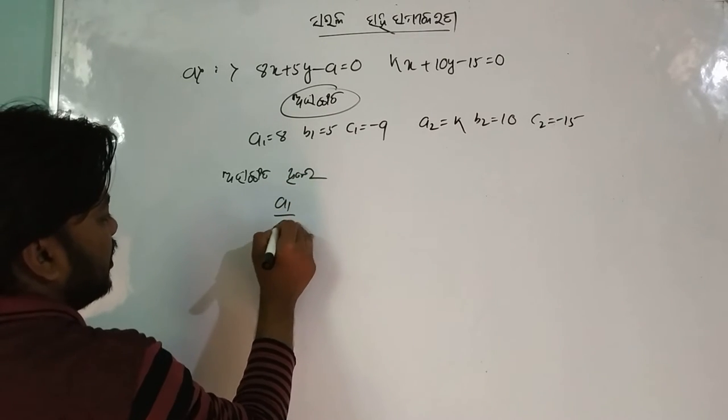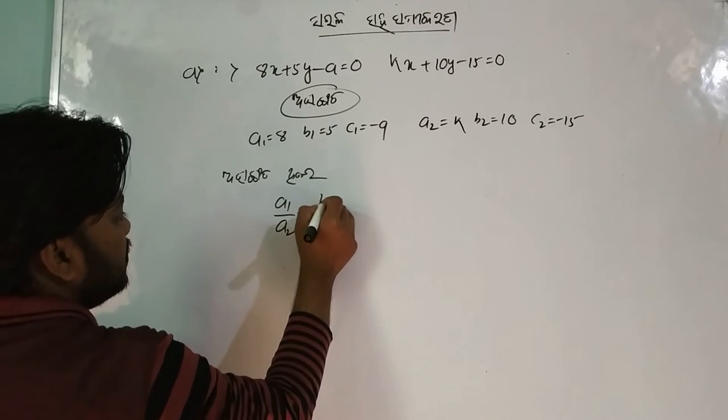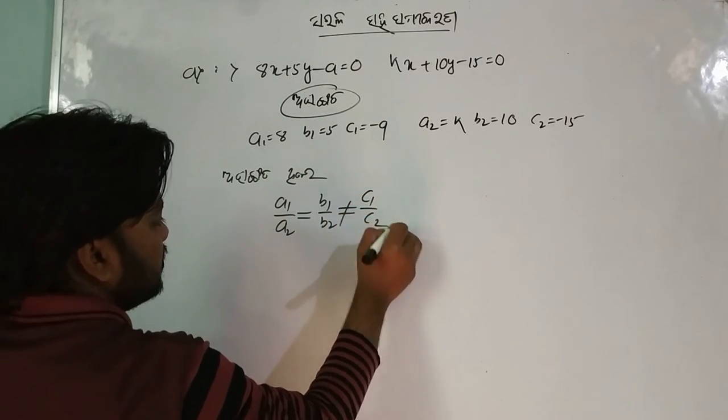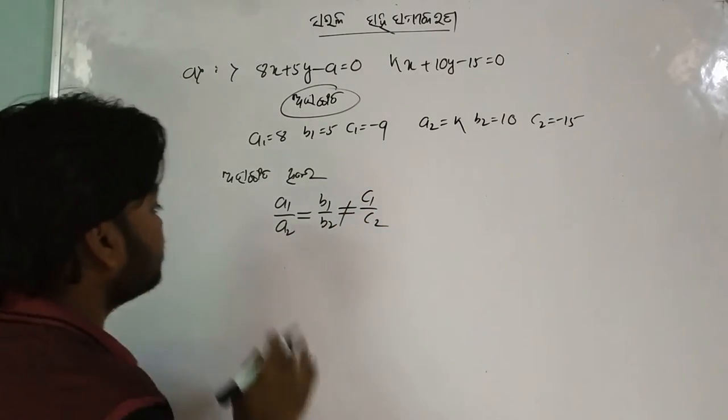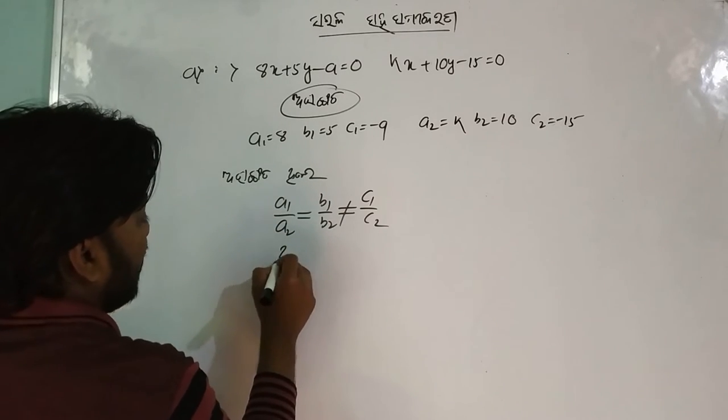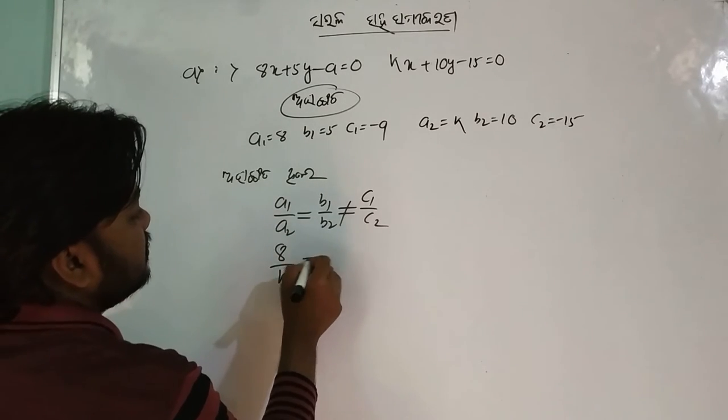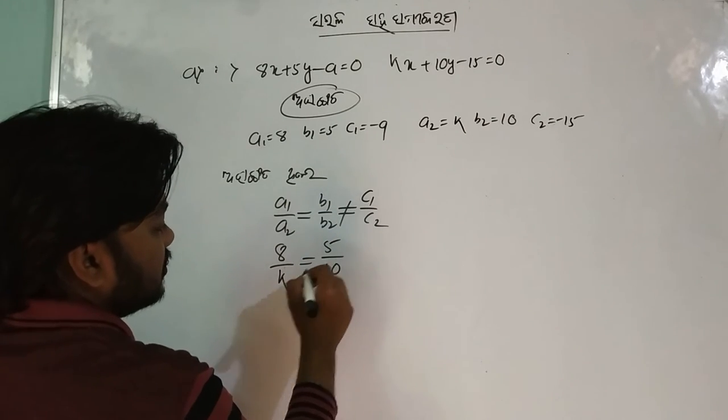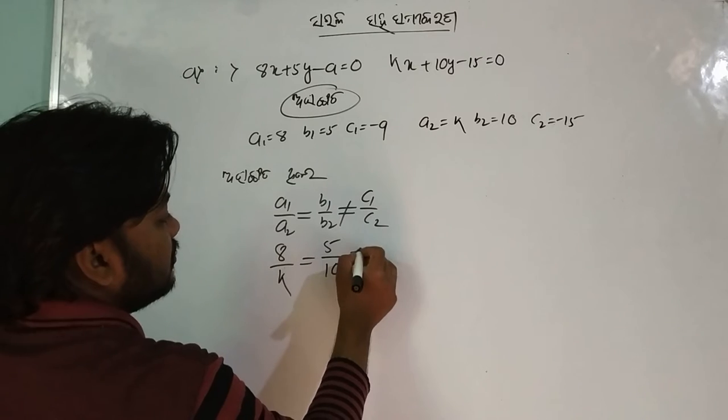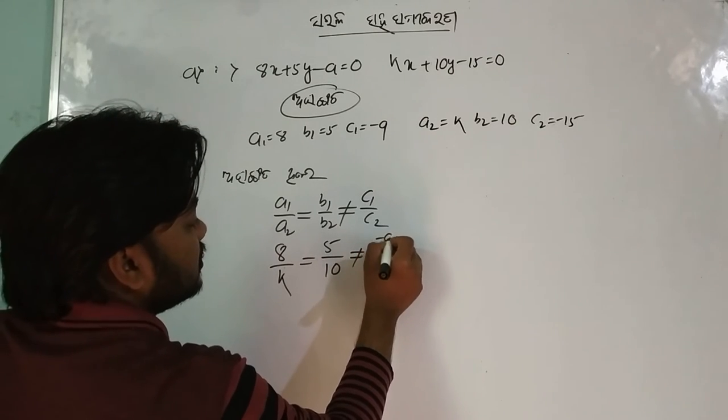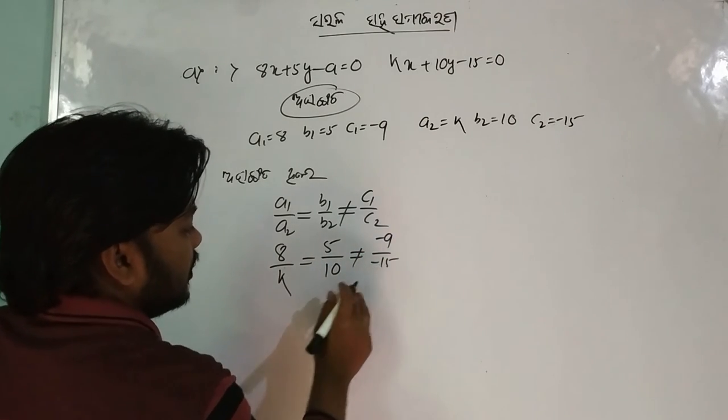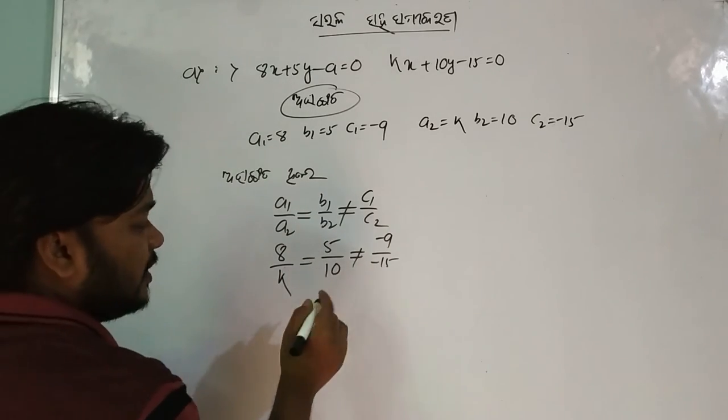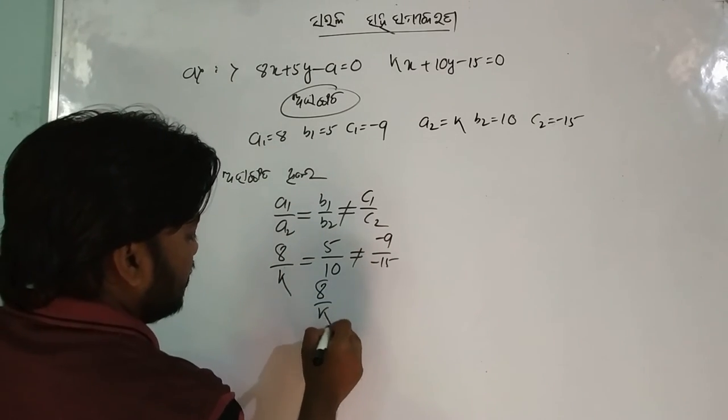Now a1 by a2 is equal to b1 by b2 is not equal to c1 by c2. So a1 is equal to 8, by a2 is equal to b1 is equal to 5, by b2.